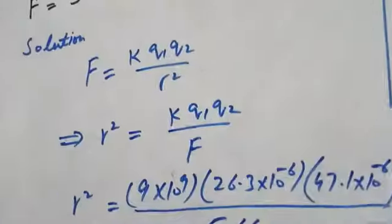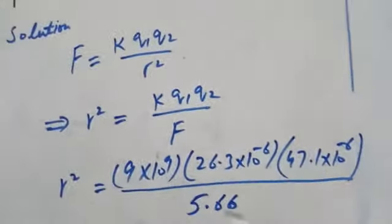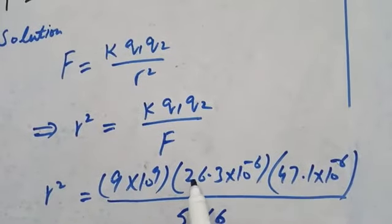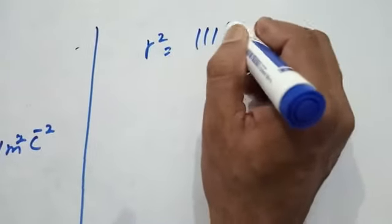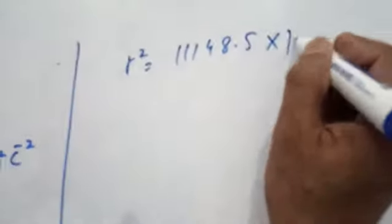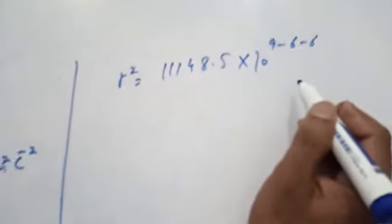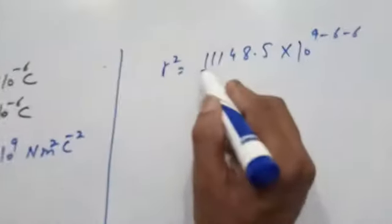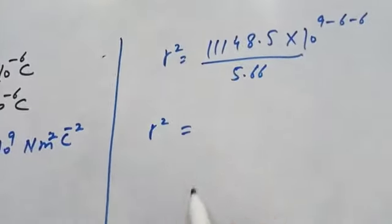Now multiplying these terms: r² equals 148.5 × 10^(9-6-6) divided by 5.66.